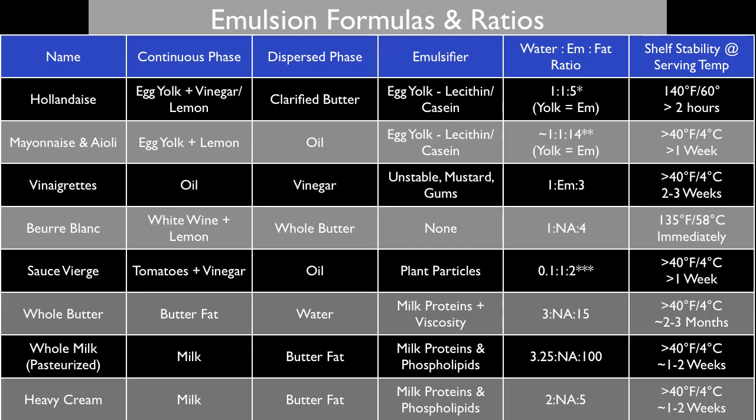For example, look at the vinaigrette column. Vinaigrette's continuous phase is actually oil and the dispersed phase is vinegar, which makes this a water-in-fat emulsion — and they're normally unstable unless you add mustard or some sort of food-grade gums. Another thing I want to draw your attention to is sauce vierge, because sauce vierge — I will link a recipe in the show notes — has a continuous phase of tomatoes ground up with vinegar, and this is a good example of using plant particles as an emulsifier.